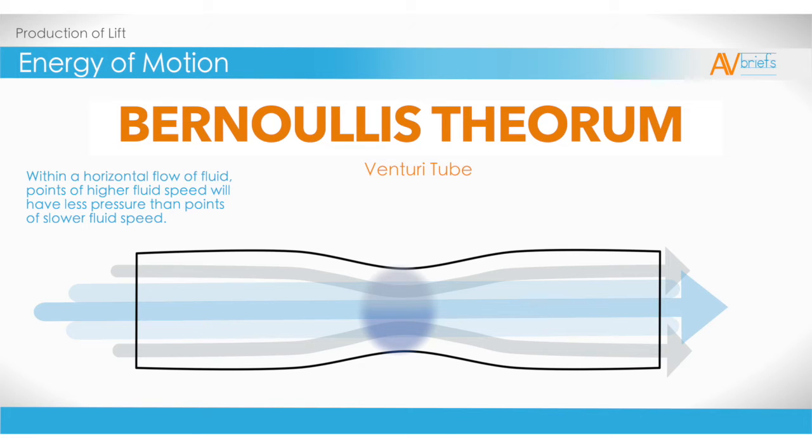Remembering what we just learned about static pressure, let's see how that relates to the production of lift. His theorem states, within a horizontal flow of fluid, points of higher fluid speed will have less pressure than points of slower fluid speed. The fluid he's referring to for our purposes is air, as air is indeed classed as a fluid.